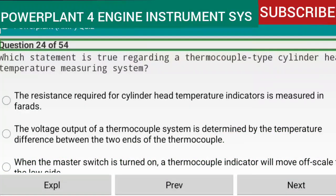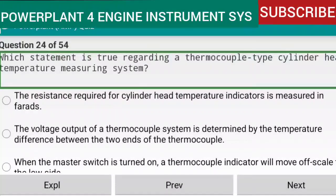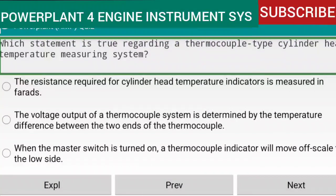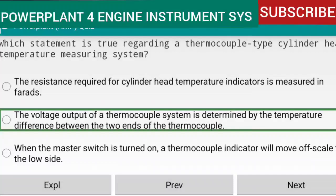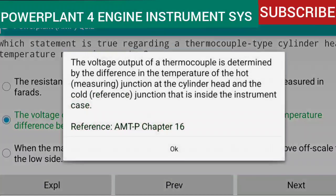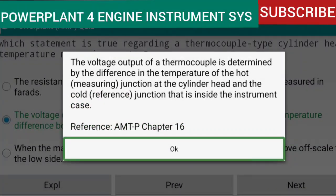Question 24 of 54: The voltage output of a thermocouple system is determined by the temperature difference between the two ends of the thermocouple. Specifically, it is determined by the difference in temperature between the hot measuring junction at the cylinder head and the cold reference junction inside the instrument case. Reference: AMTP Chapter 16.